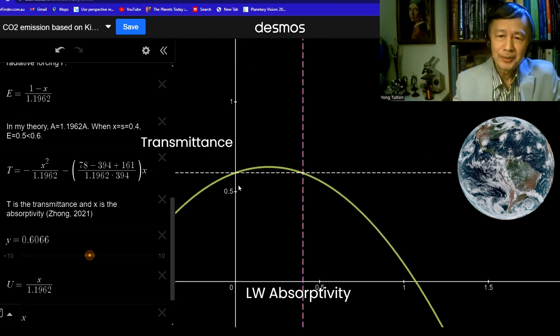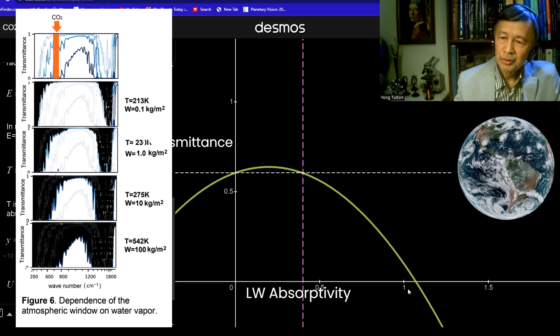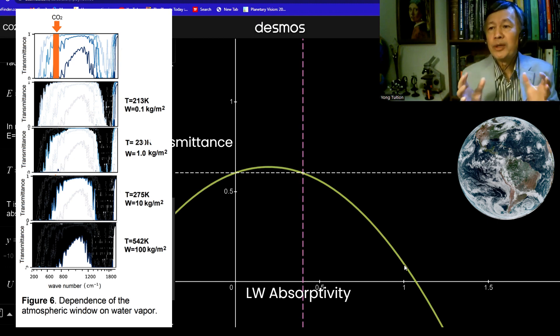So in general, you can see as the absorptivity increases from zero to unit, which is the maximum, which is 100%, that is a real scenario when all of the terrestrial IR radiation is absorbed by the atmosphere. Even at this maximum absorptivity, the atmosphere still keeps its window open slightly to allow about 10% of the terrestrial radiation to go out.